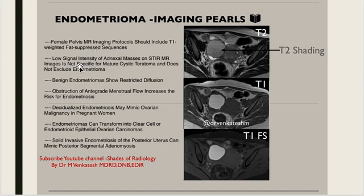The second point is that low signal intensity of adnexal masses on STIR is not specific for teratoma, and it does not exclude endometrioma. Kindly remember this point. On STIR, if there is low signal, it is not always specific for mature cystic teratoma, and it never excludes endometrioma. We should be careful in looking at the other sequences.